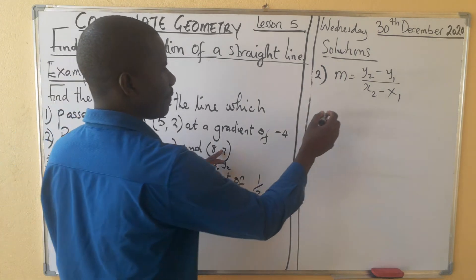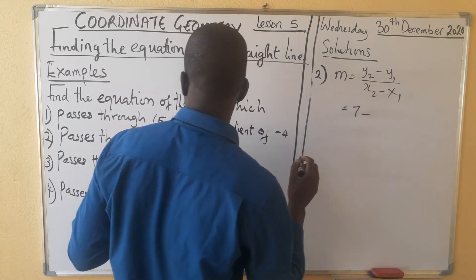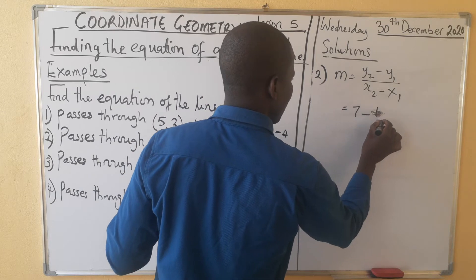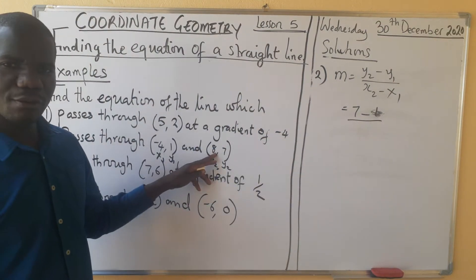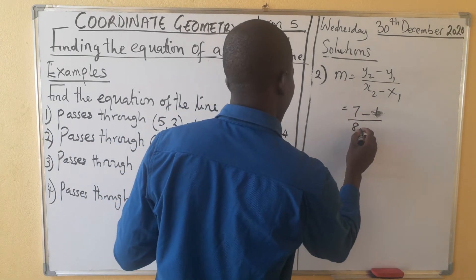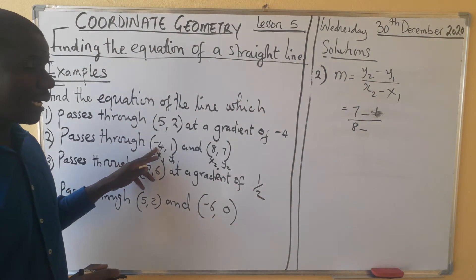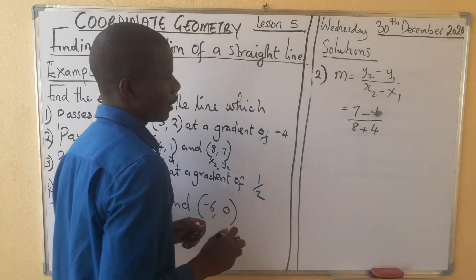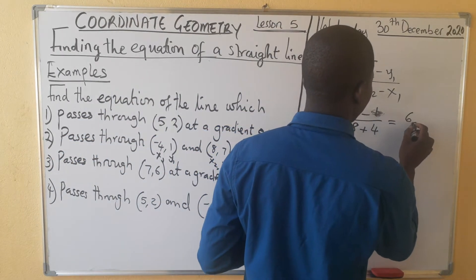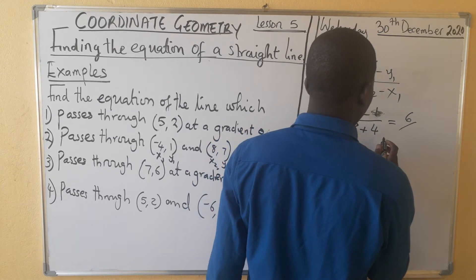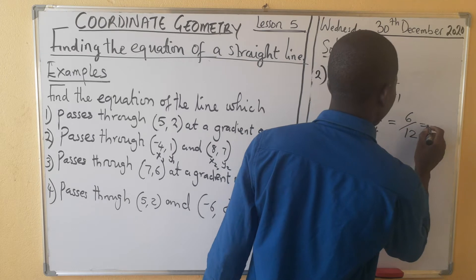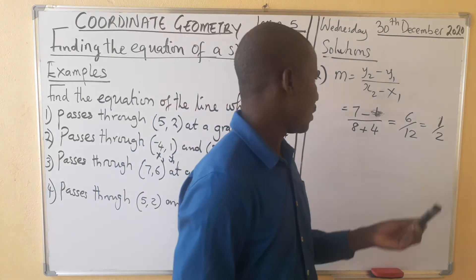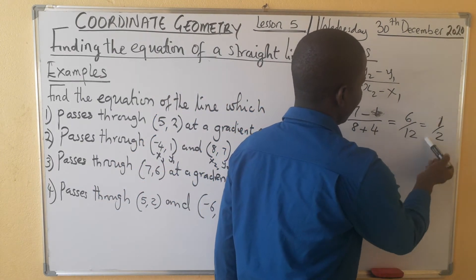Substituting, we get seven minus one over eight minus negative four. Because of the negative, the denominator becomes a plus, giving us eight plus four equals twelve. So we have six over twelve, which simplifies to one over two. This is our gradient.